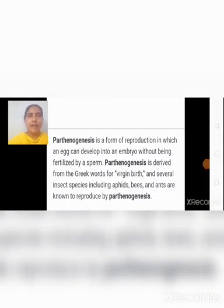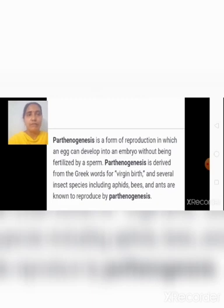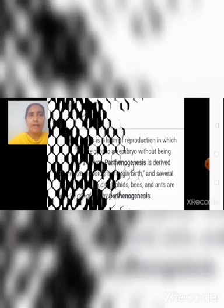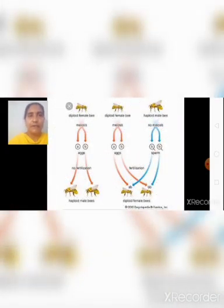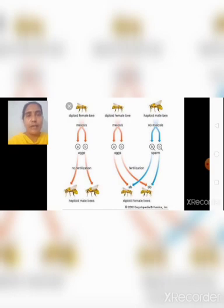Here you can see another type of asexual reproduction: parthenogenesis. Parthenogenesis is a form of reproduction in which an egg develops into an embryo without being fertilized by sperm. Parthenogenesis is derived from the Greek words — 'partheno' meaning virgin and 'genesis' meaning reproduction — together meaning virgin birth. Several insect species including aphids, bees, and ants are known to reproduce by parthenogenesis. In parthenogenesis, males are developed from unfertilized eggs, and females are developed from fertilized eggs. During formation of gametes, male gametes are developed by mitotic division, whereas female eggs are also developed by mitotic division.